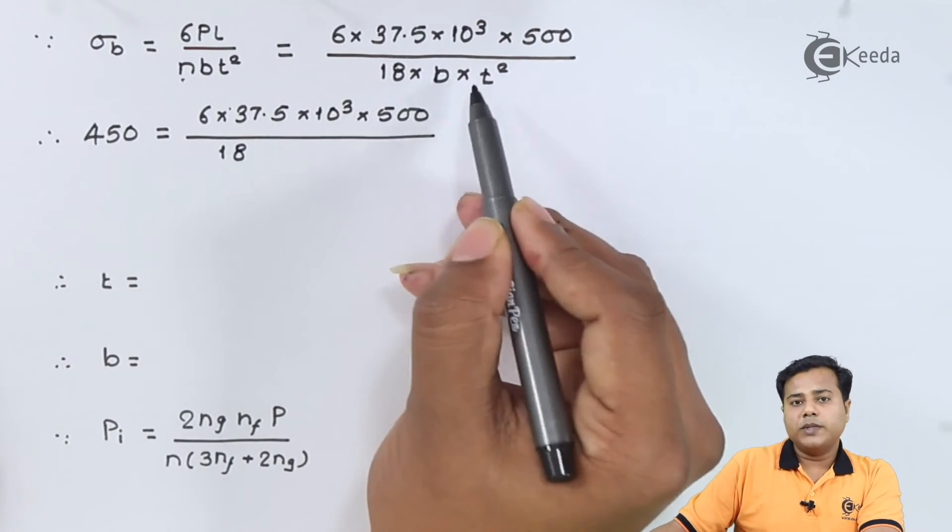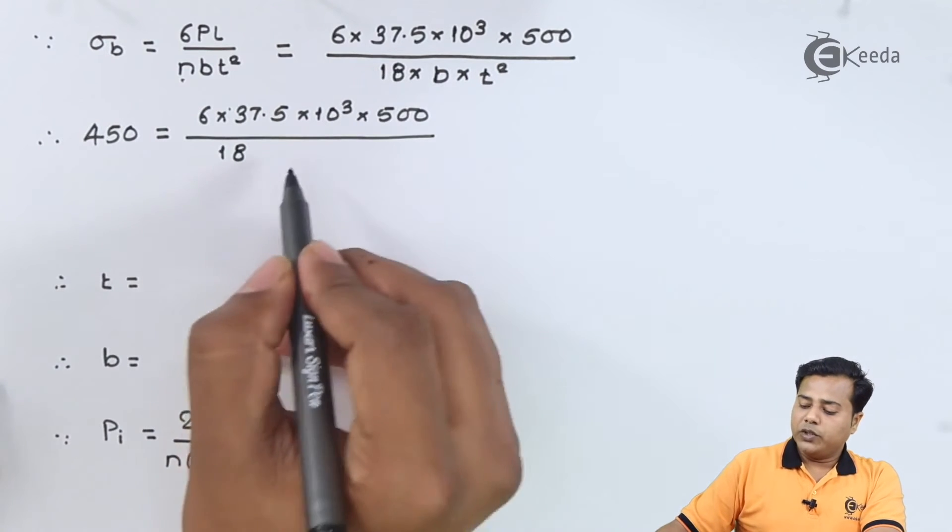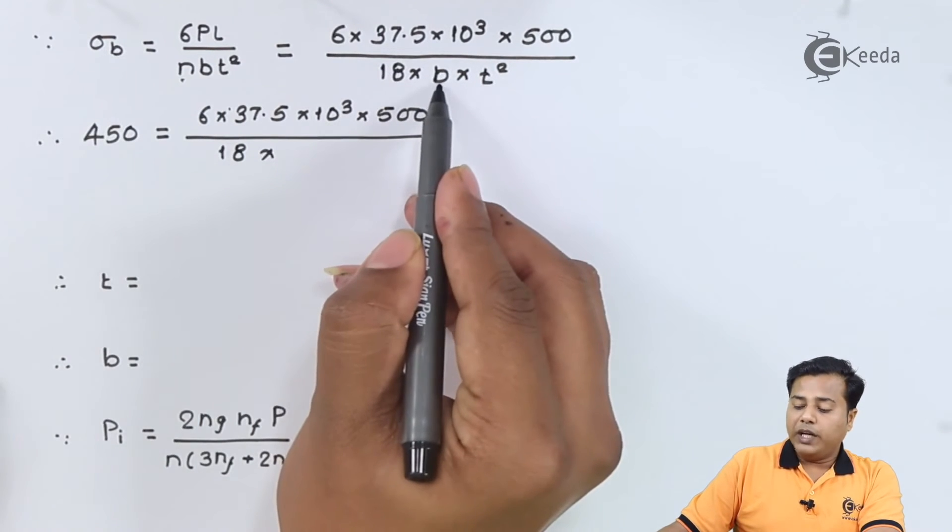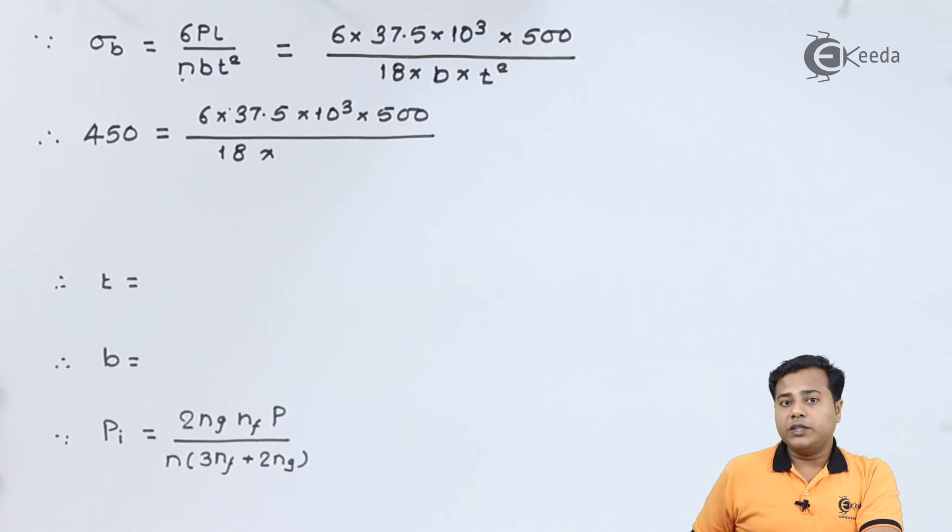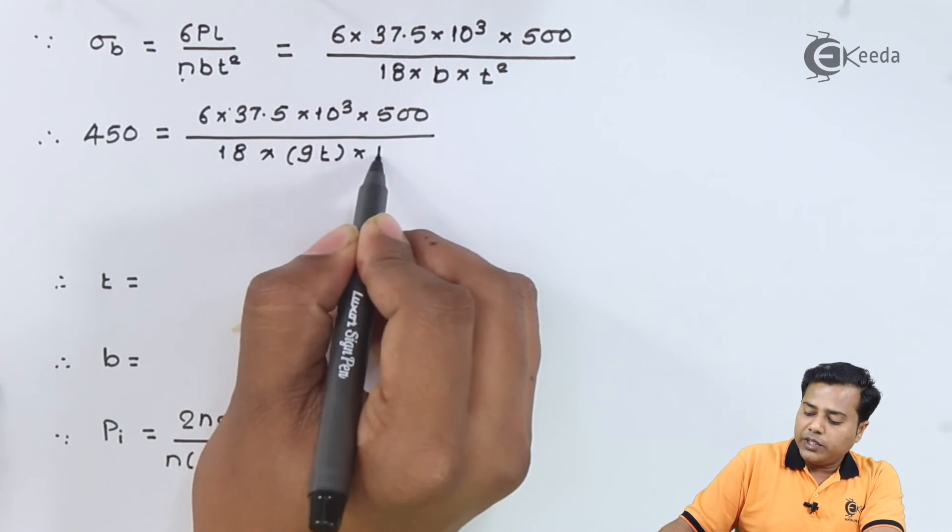Now there are two unknowns basically, but we already have been given another relation between them. So let us substitute that relation. We know that b is equal to 9 times the thickness. So therefore it becomes 9 × t × t².